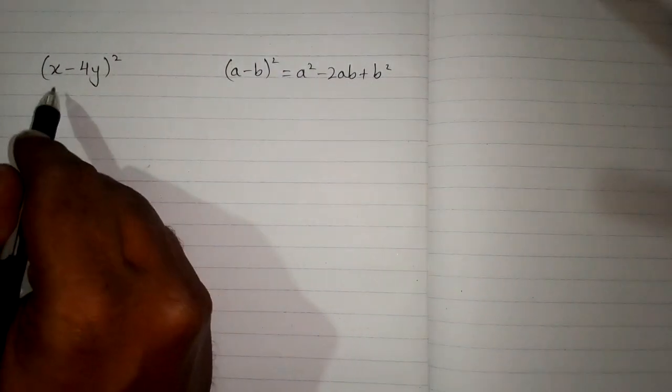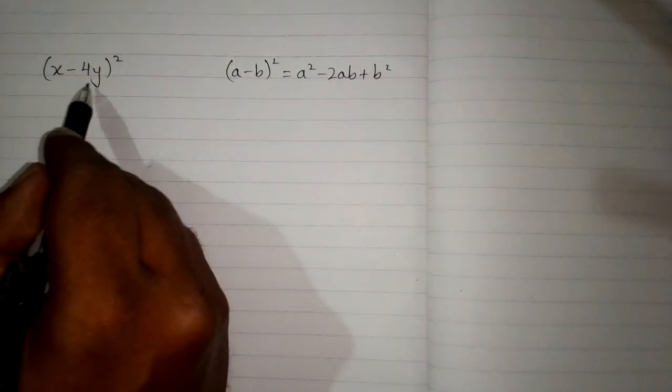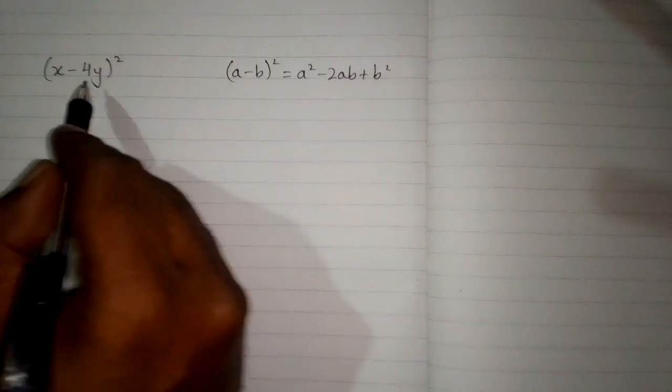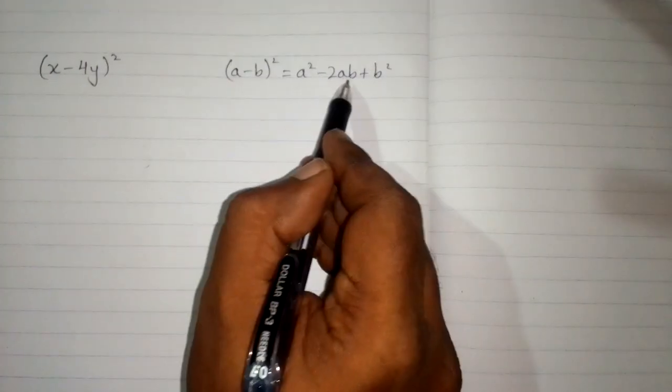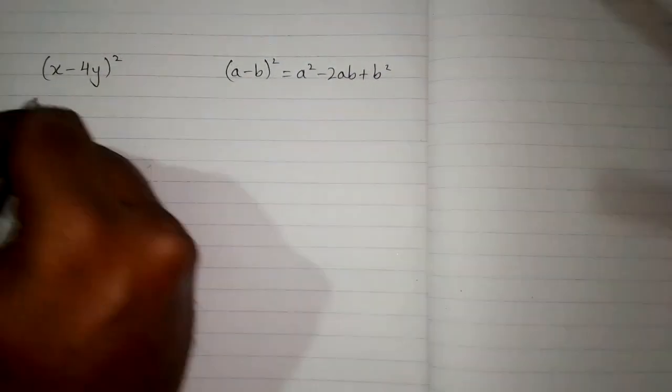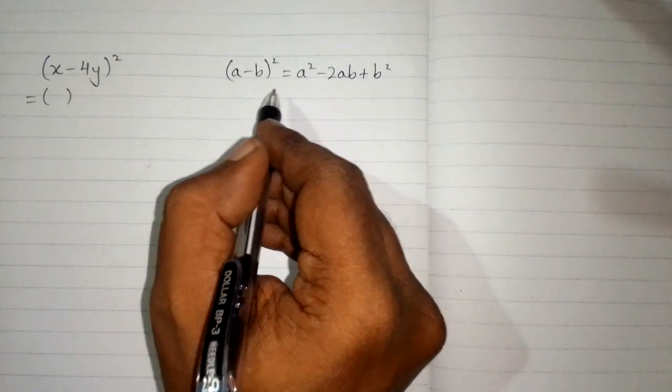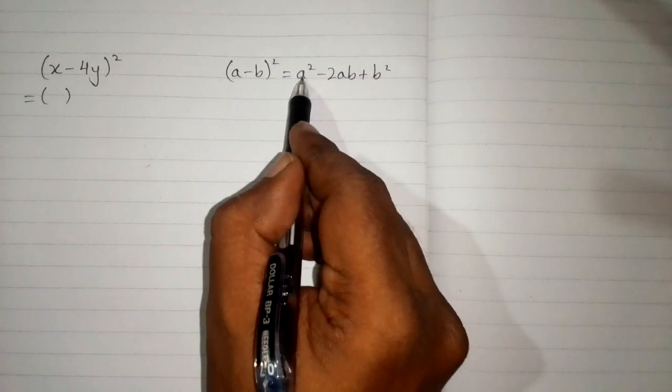So here we can see that we have x in place of this a and 4y in place of this b. So we will put the value of x in place of a and 4y in place of b. First we will write the structure of the formula. We can put brackets in place of a and b.